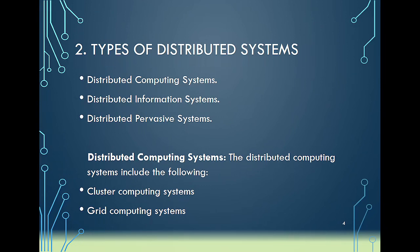You can also refer to a distributed system as a collection of independent computers that appear to its users as one single computer altogether. So if you have a collection of independent computers and you can access them all using one interface, that also defines what distributed systems are.